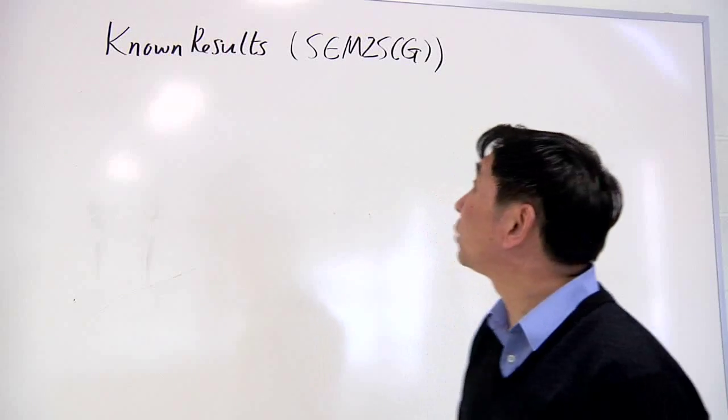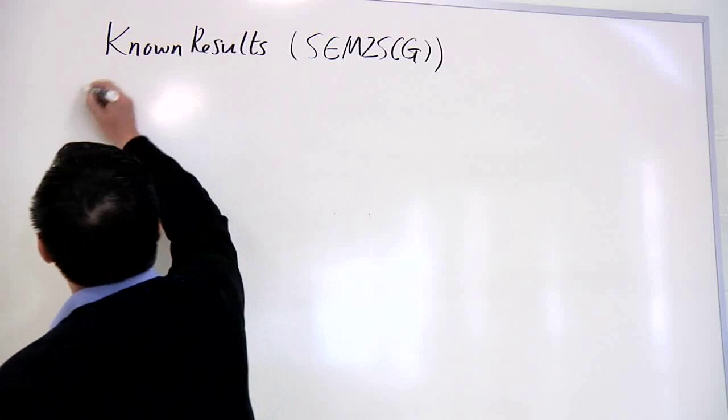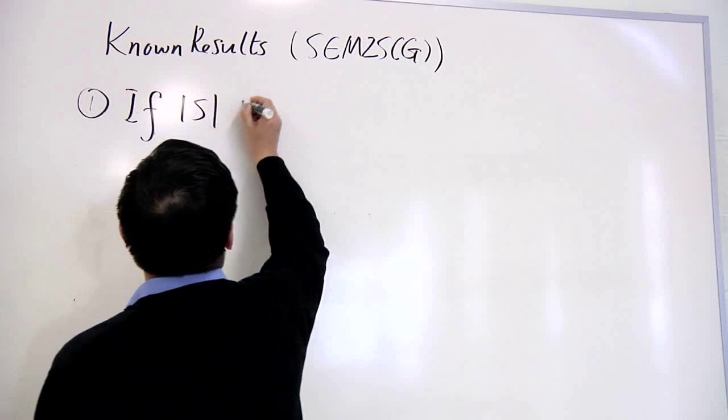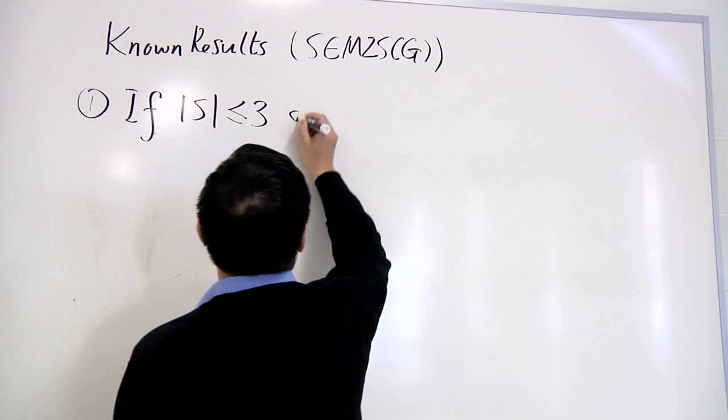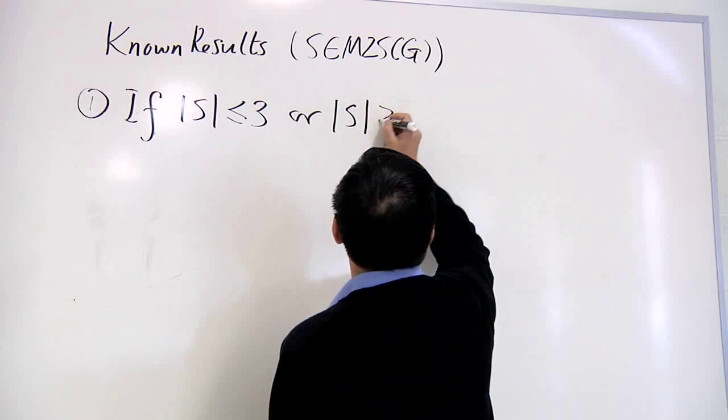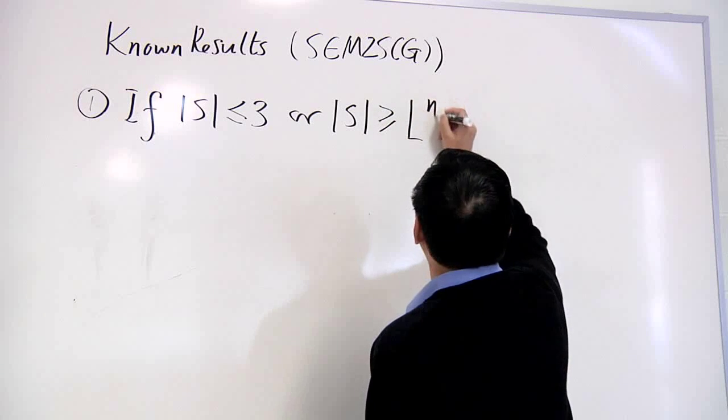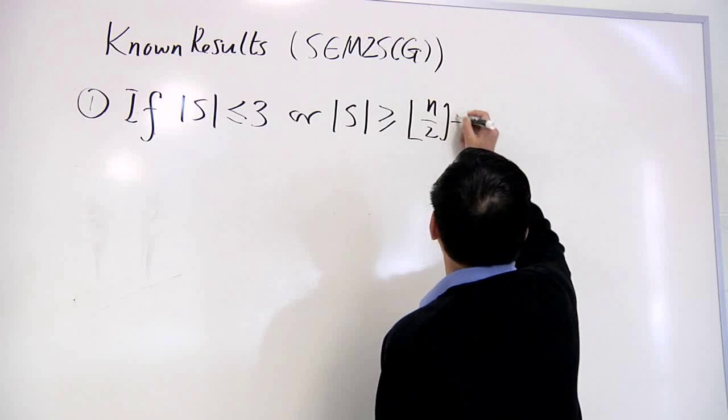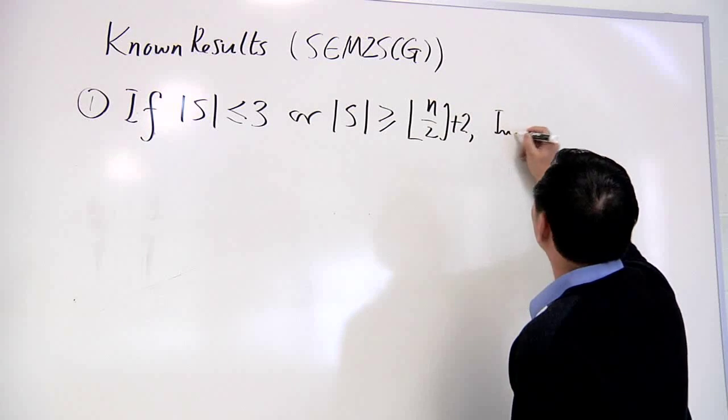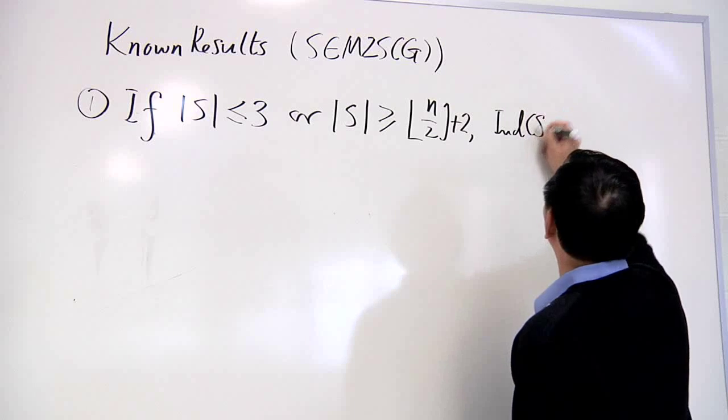The known results are: if the length of the sequence is at most 3, or the length is greater than or equal to floor of n/2 plus 2, then the index of such a minimal zero-sum sequence is always 1.